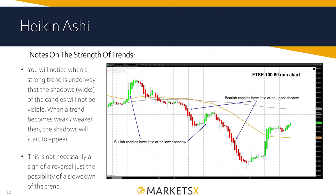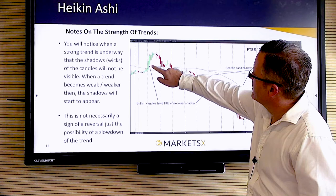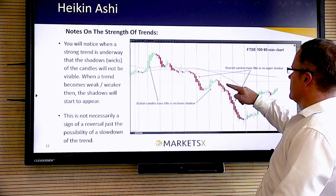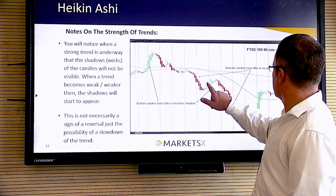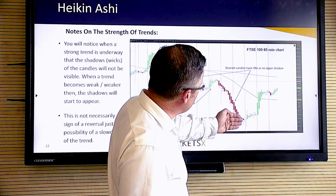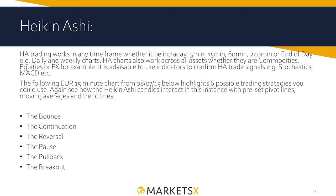Big down bars with little or no upper shadows signify strong selling pressure. As the trend strengthens to the downside, you'll notice no wicks above the candle, and the same to the upside as it goes up. As the trend weakens, you start to see wicks appearing on the opposite side. Here's an example on the FTSE 100 on the 60-minute chart — you can see when a strong trend is underway there are no underlying wicks. We can also see some Doji combinations; more of these together are a sign of a reversal, and quite clearly down at the bottom with a good combination the price changed and reversed back.